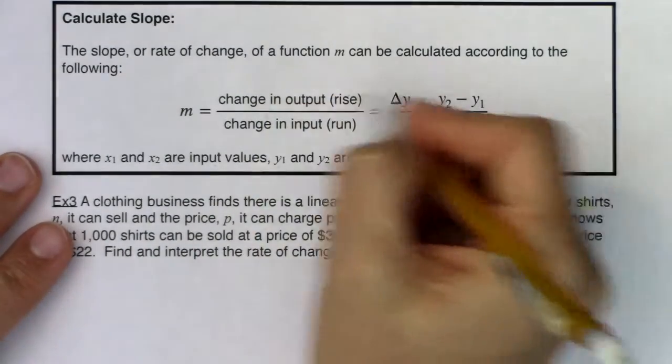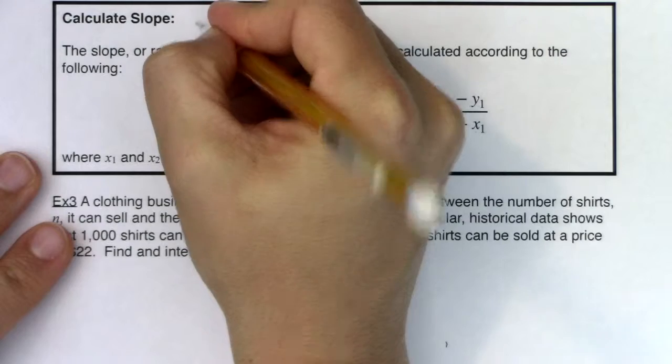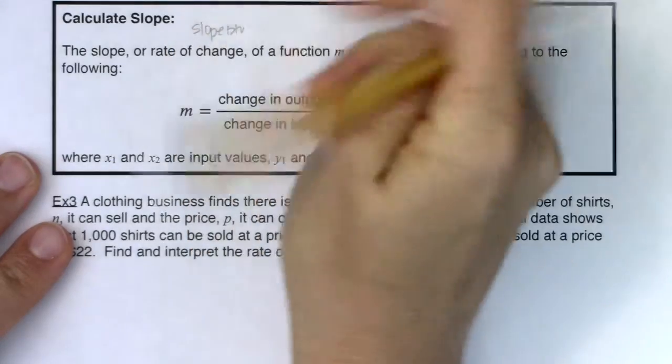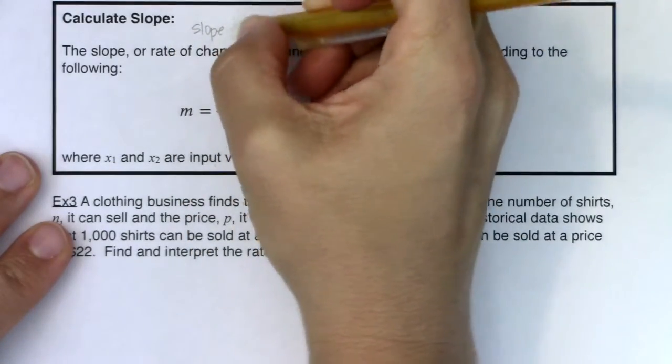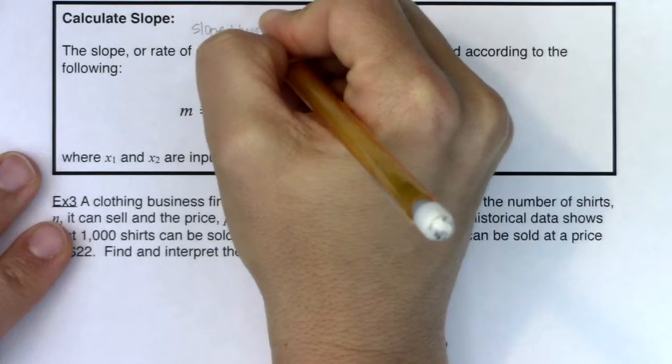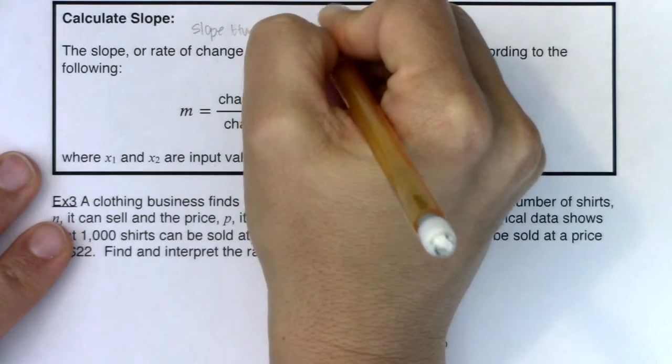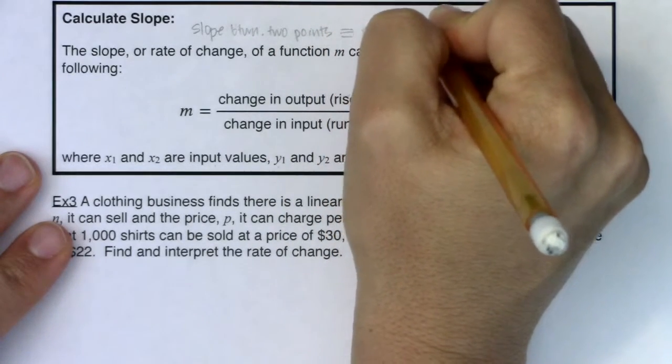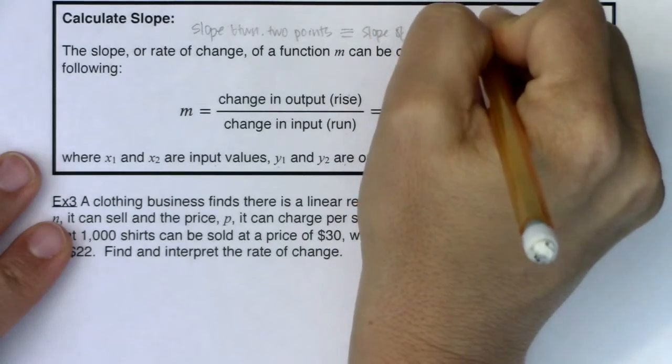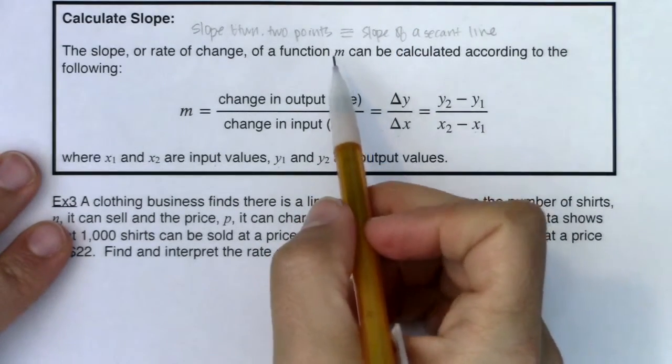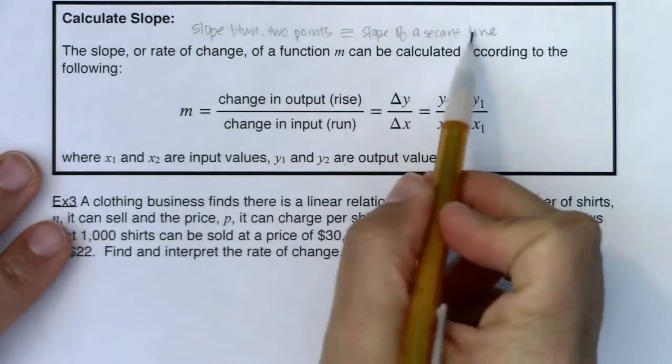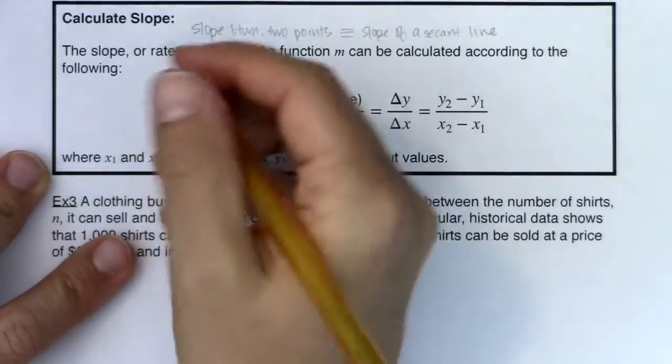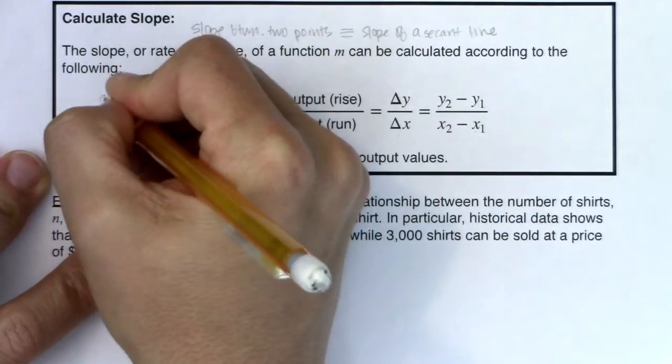Now, for slope, when you're calculating the slope this way, I'm going to make sure I say this. This is the slope between two points. Sometimes you'll hear this referred to as the slope of a secant line. When you hear secant line, it quite literally means that there are two points involved. So if you have two points involved, we're going to call that a secant line. And when you're calculating slope with this formula that you've been used to for a while now, this is the average rate of change.